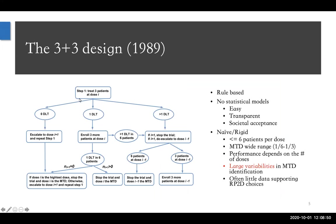This is a diagram we published about five years ago, essentially putting the 3+3 design into a single diagram. You can see it's a rule-based design because there is no modeling at all, and all dose-finding decisions are pre-specified. In the first step, we treat three patients at a given dose. Depending on how many have toxicity outcomes — DLTs — the 3+3 design provides corresponding decisions. If no one has DLTs, the decision is to escalate to the next higher dose. If there's one DLT out of three, the decision is to enroll three more patients at the same dose, resulting in six patients.